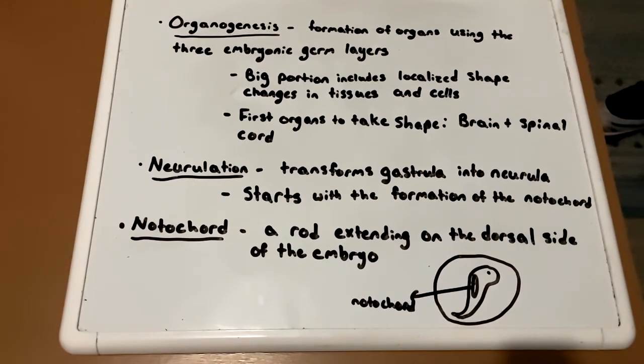Organogenesis is the formation of organs using the three embryonic germ layers, which are the ectoderm, the endoderm, and the mesoderm. A big portion of organogenesis includes localized shape changes in tissue and cells. The first part of organogenesis can be seen in the tissue folds, splits, and dense clustering of cells.